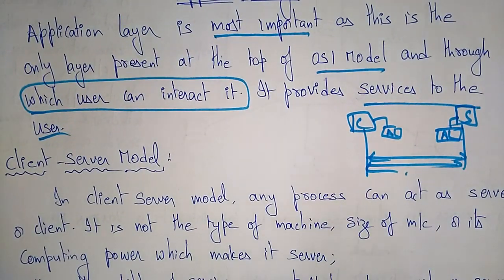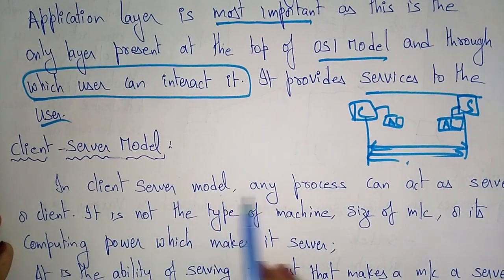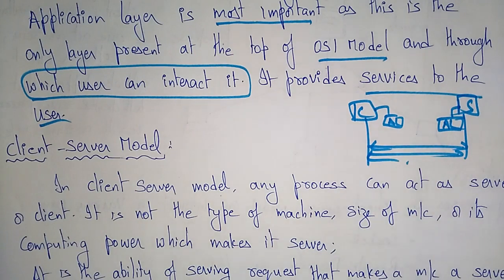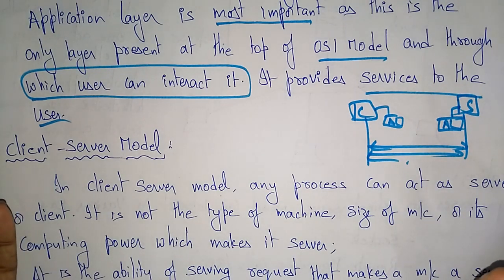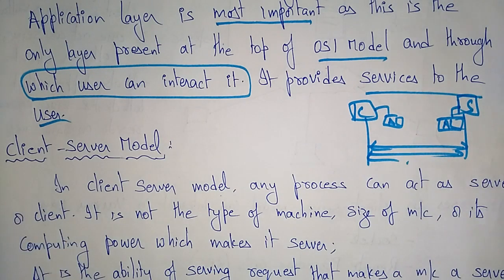Let's take an example for the application layer — the client-server model. The client-server model is one application of the application layer. In the client-server model, any process can act as a server or a client. For example, I act as a server when interacting with students, and as a client when interacting with my teacher.